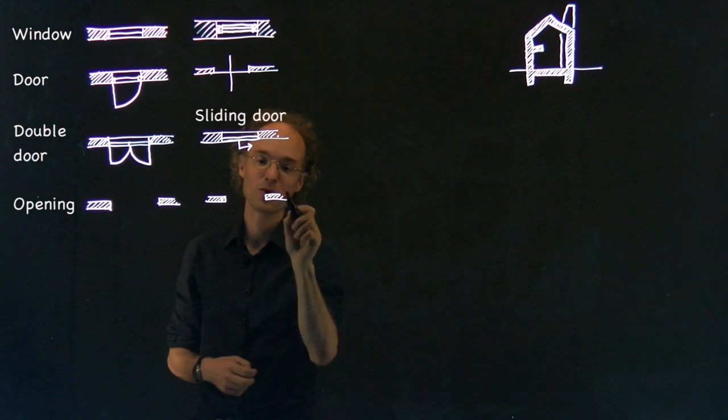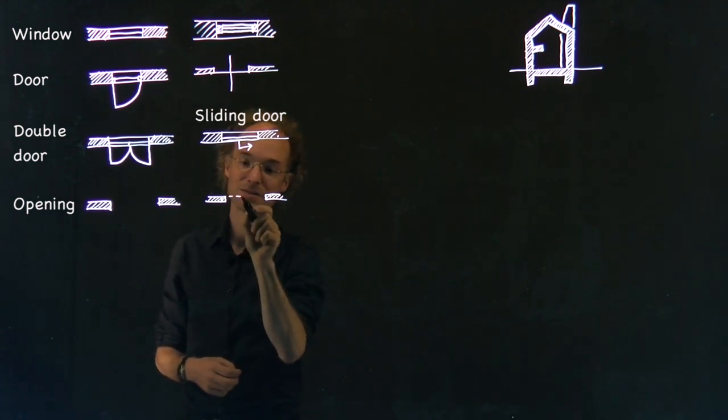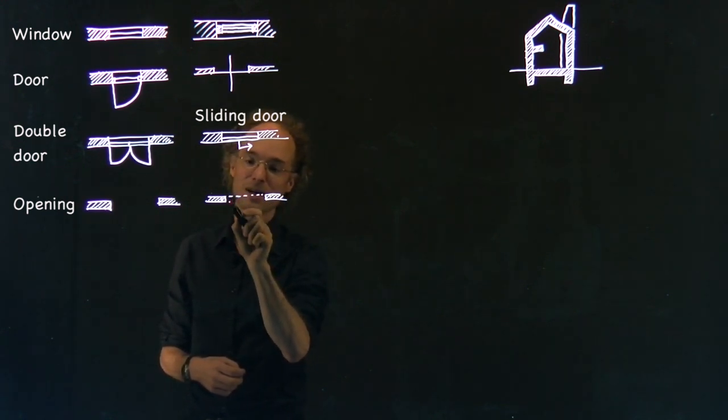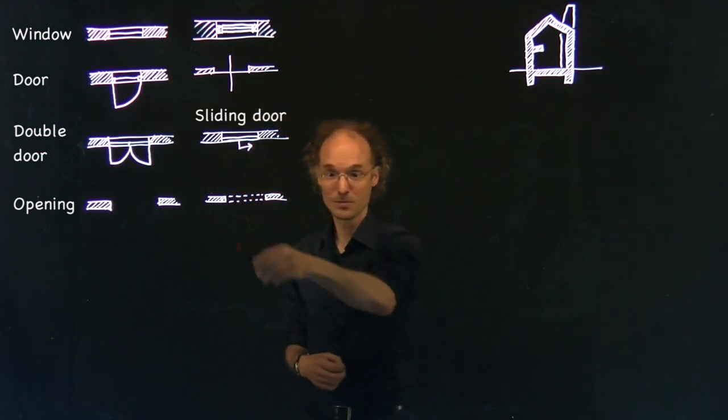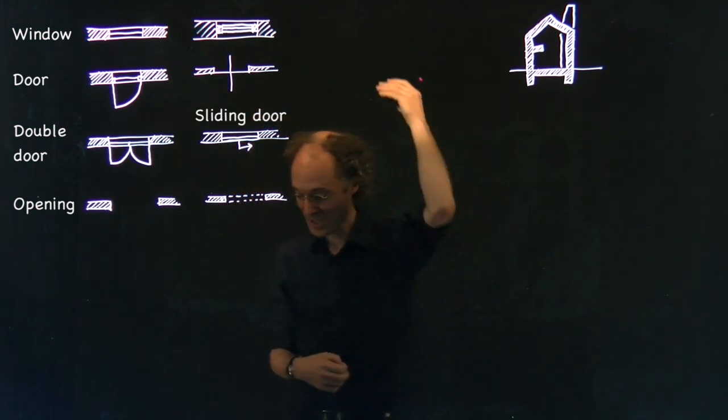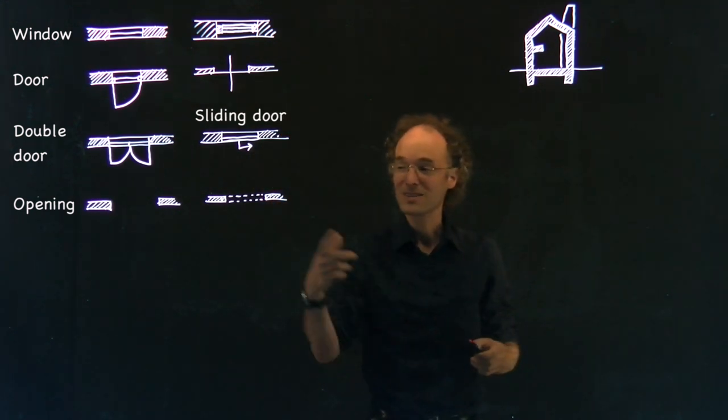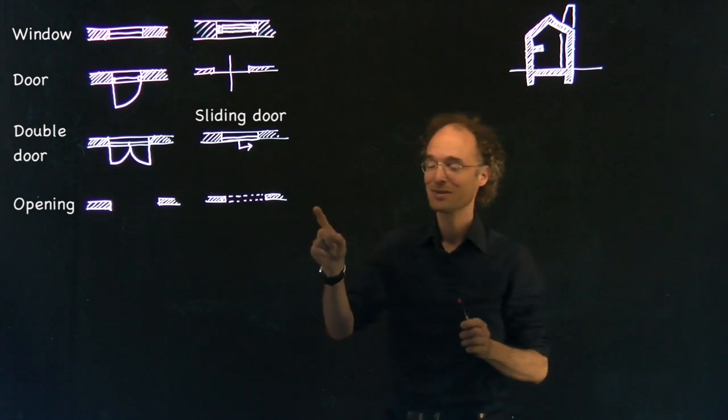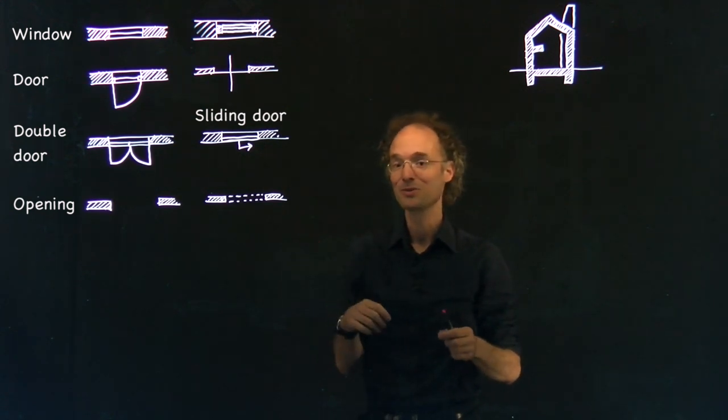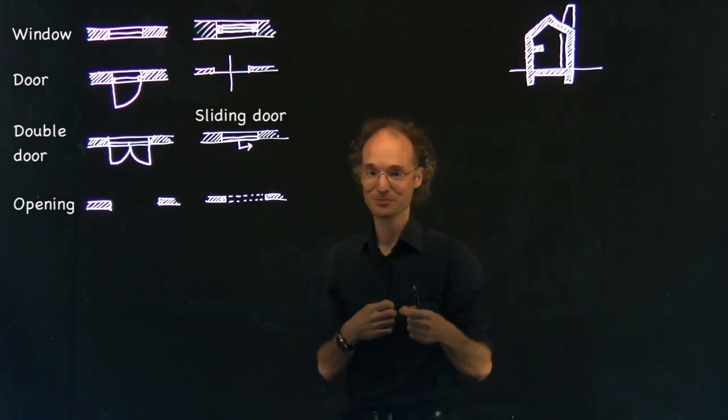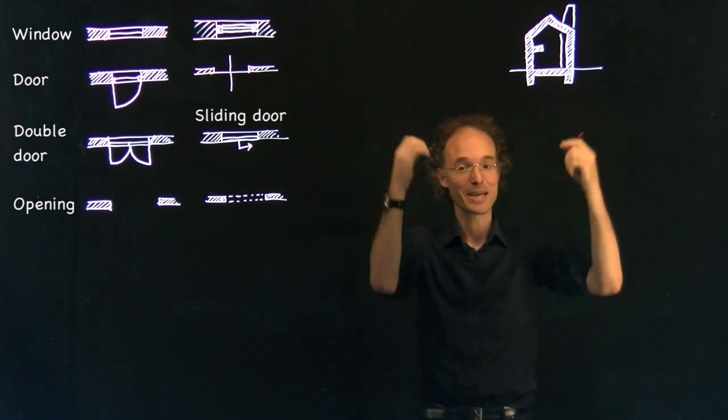So again, a wall with an opening, but in that case I need dashed lines. This shows an opening in a wall with a part of the wall above you. So this tells you something about how to draw voids in plans or about things in a plan which are above your head.